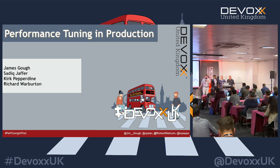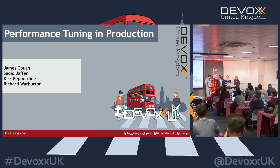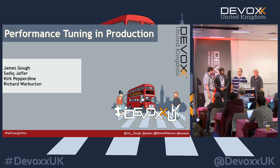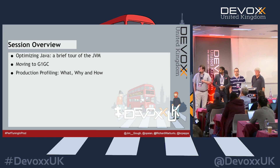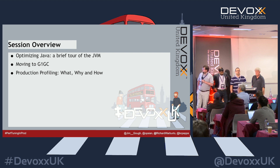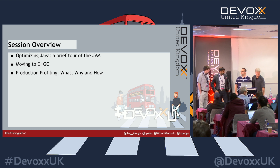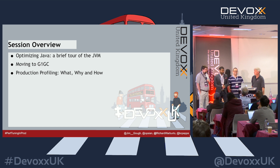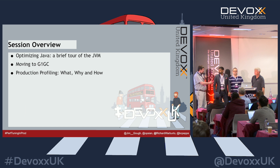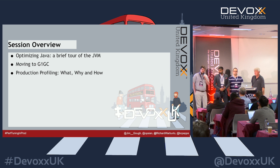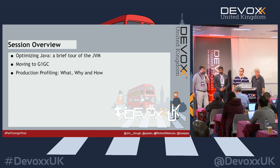This session, unlike some of the other deep dives, is working a little bit differently. We've got three parts this session that we're going to integrate together. James Goff is talking through the first section — he'll talk about optimizing Java, giving us a baseline tour through the JVM. Then Kirk's talk, which is just garbage. And then the third part is Sadiq and I talking on production profiling: what, why, and how. If there's any time left, we'll try to do a mini Q&A panel with all of us.